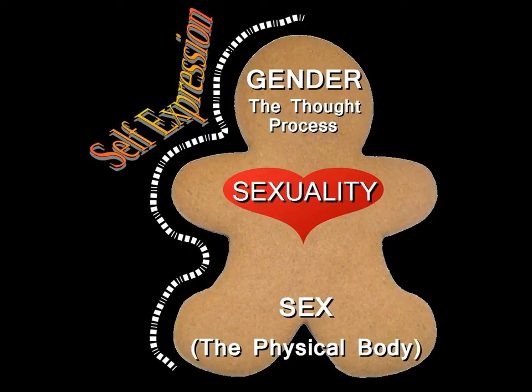Every one of us has these four things. Every one of us has a gender. Every one of us has a sexuality, even if you don't like sex. Every one of us has a physical body of some sort with various parts. And every one of us has a self-expression that we adopt. No one doesn't have all four in some way. But no one of them determines any of the others. That is the concept of the genderbread person.